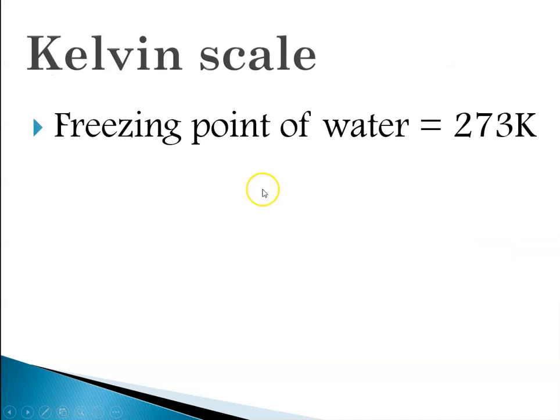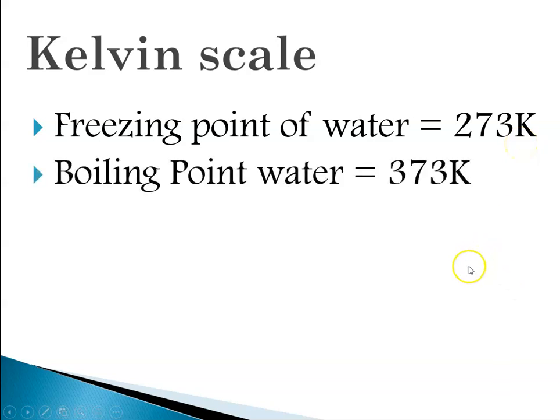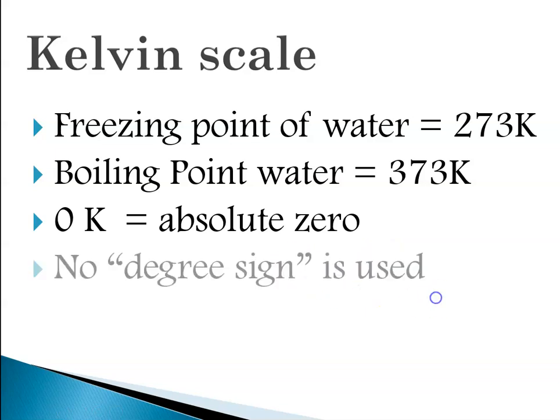The Kelvin scale: the freezing point of water is 273 Kelvin and the boiling point of water is 373 Kelvin. So zero Kelvin is, as I've mentioned, considered absolute zero. You'll notice that when you're writing Kelvin temperature there is no degree sign used, and that is the international convention. So with C and F you put a degree sign, with Kelvin you do not.